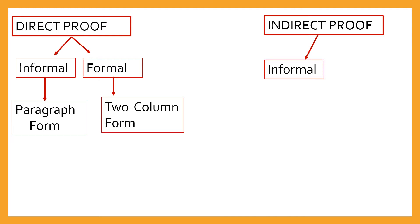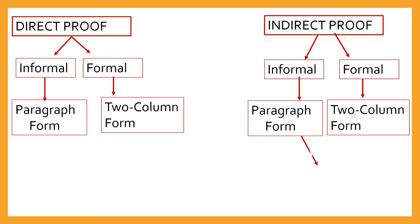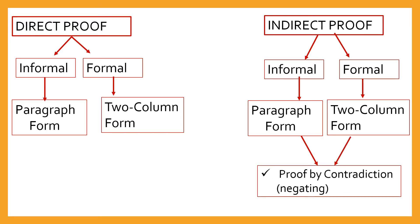For indirect proof, we have also informal or formal. You can write it in two-column proof or paragraph proof. But this kind of proof is a proof by contradiction, which means you are contradicting the conclusion. Contradicting means negation. If that is equal to, then you are going to contradict that it's not equal to. If it's not equal to, then you are going to contradict that to equal to.